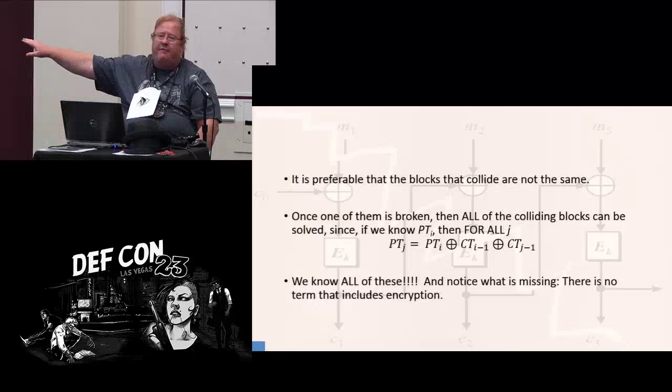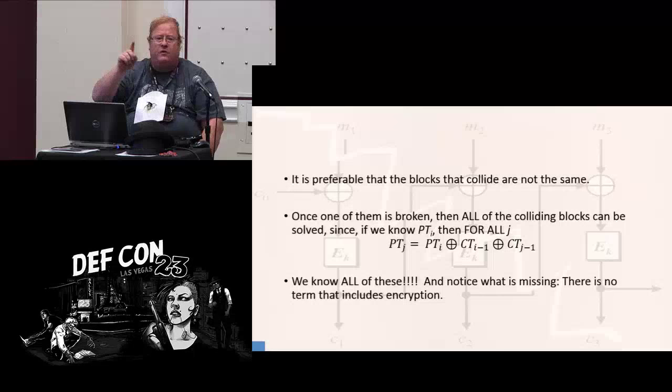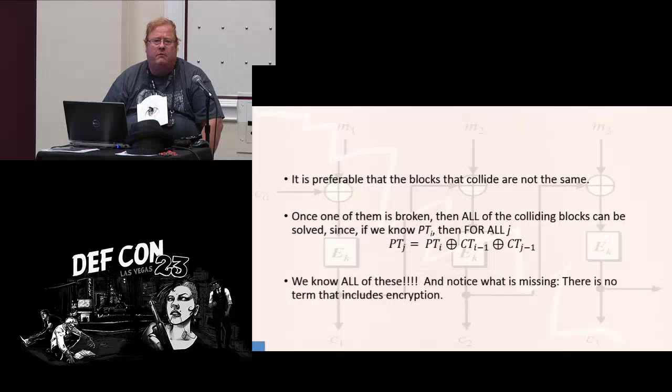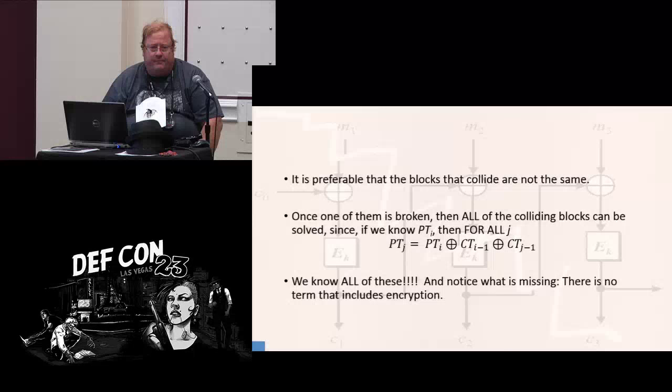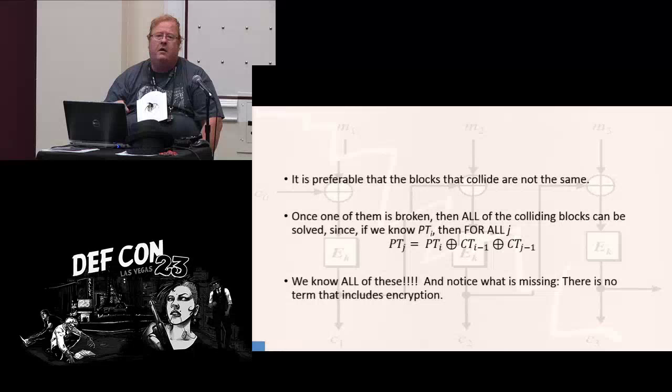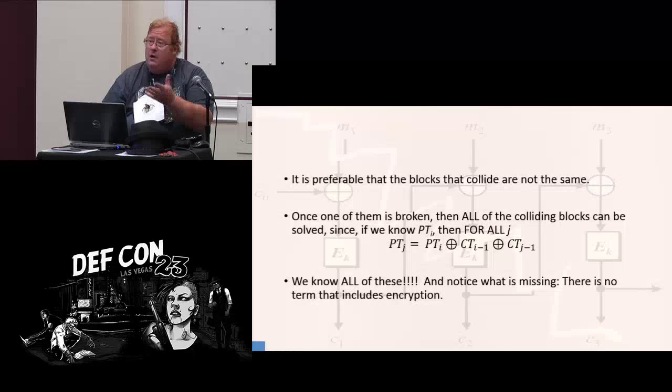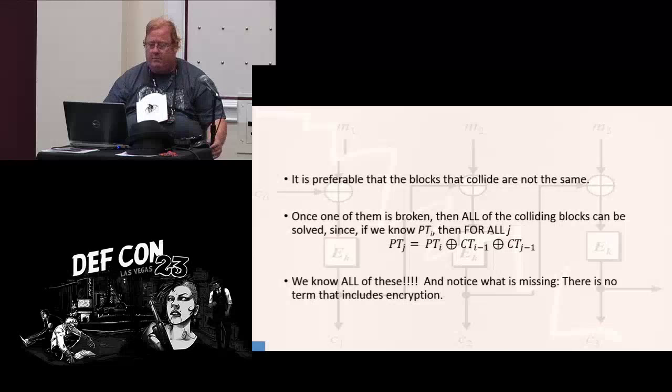I appreciate that an AES block is pretty big. I and J are two different collisions somewhere in the message. Notice that we know all of those quantities once we have a single block broken. But the interesting thing is, notice what's missing. There isn't a single instance of the encryption. This means that this technique is pulling back the message from the randomization around the cipher. It does not include the encryption. Breaking AES is as easy or as hard as breaking a shift cipher of the same type. Nothing in here is dependent on that encryption.